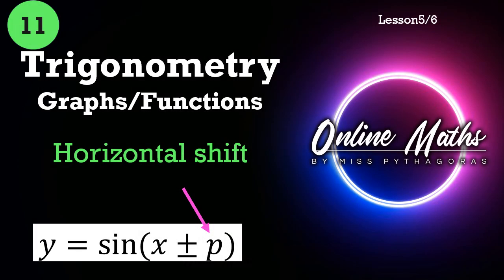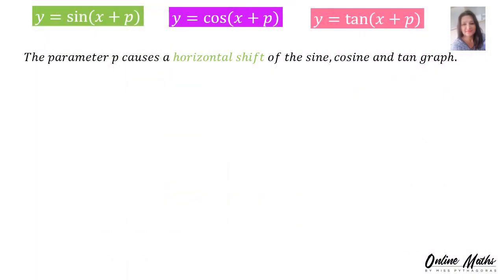Hello, everybody. In this lesson, I will discuss the effect of P on a trig function. Where do we find P? Y is equal to sin(X + P), or Y is equal to cos(X + P), or Y is equal to tan(X + P). The parameter P causes a horizontal shift of the sin, cosine and tan graph.